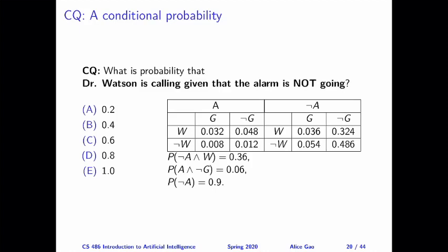For the next two slides, I have two practice questions for you to practice using the product rule. I will include the process in a separate video, and in this video I will only give the solutions. The first question: we want to calculate the probability that Dr. Watson is calling given that the alarm is not going — P(W | ¬A). The correct answer is 0.4.